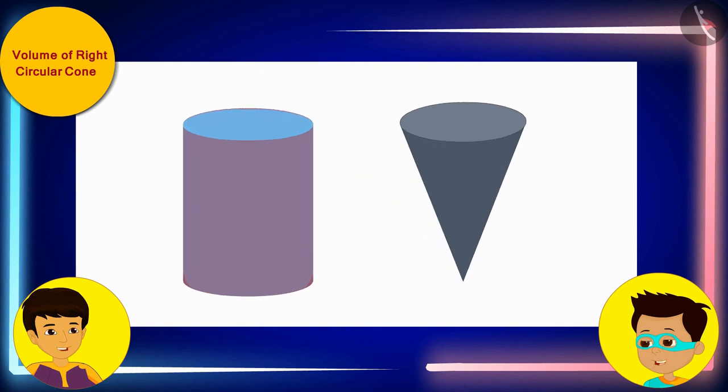Yes, Thomas! So, we can conclude that the volume of three cones is equal to the volume of a cylinder.